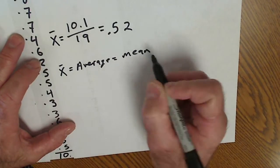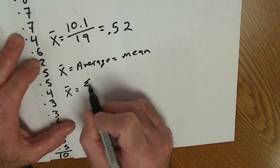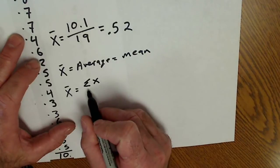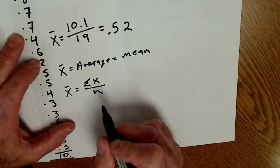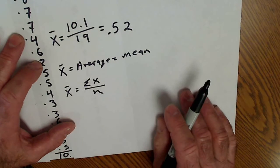And besides being the average or mean, the notation for X bar average is the sum of all the X values, the Greek letter sigma, divided by the number of values. It's not that hard. You just add them all up, divide by the number of values, and that's average.